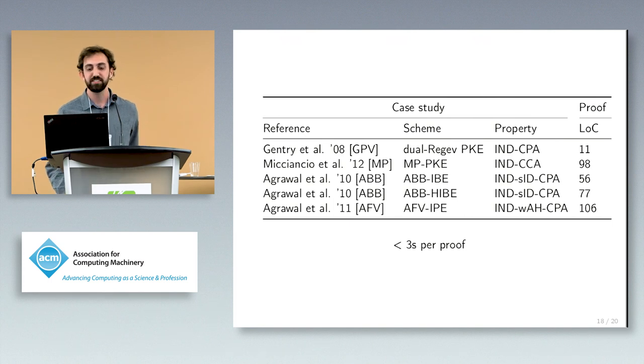In total, we give five main security proofs, one each for PKE, CCA, identity-based encryption, hierarchical identity-based encryption, and inner product encryption. All proofs given are small in size, about 100 lines of code, and fast to run. Each proof finishes checking in at most three seconds.